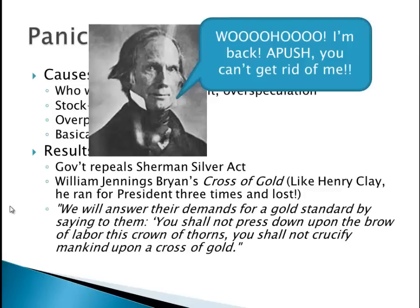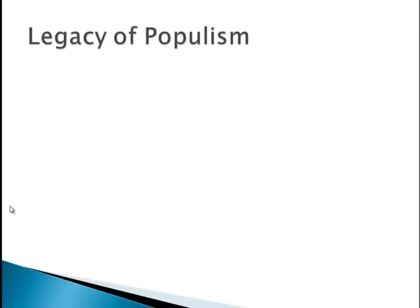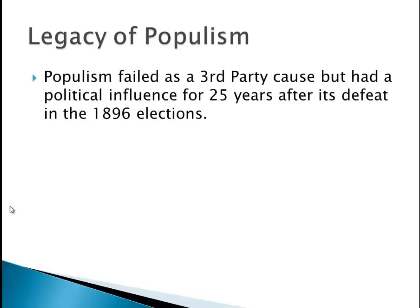Here is William Jennings Bryan's Cross of Gold Speech: 'We will answer their demands for a gold standard by saying to them, you shall not press down upon the brow of labor with this crown of thorns. You shall not crucify mankind upon a cross of gold.' He is saying: please introduce silver, you are hurting the farmers, hurting the people, hurting us out west. The legacy of populism: it doesn't last very long, about 25 years. When William Jennings Bryan loses the election of 1896, that's bye-bye populism.